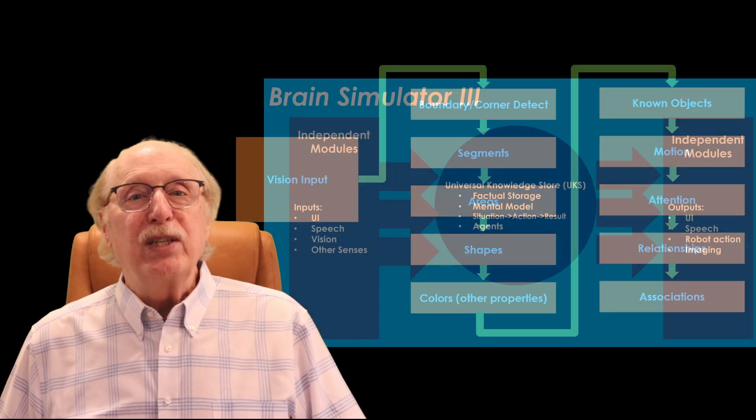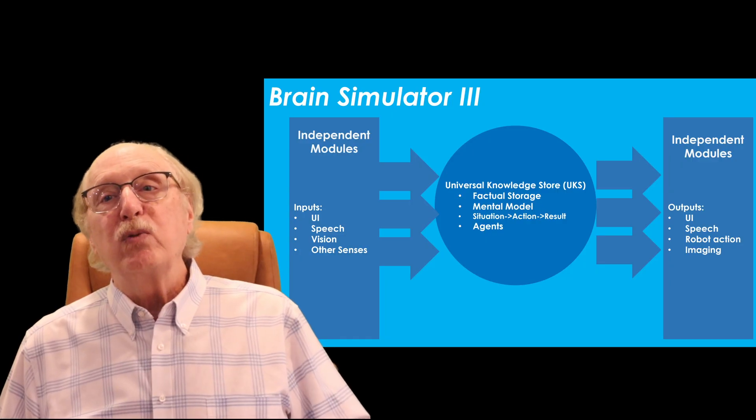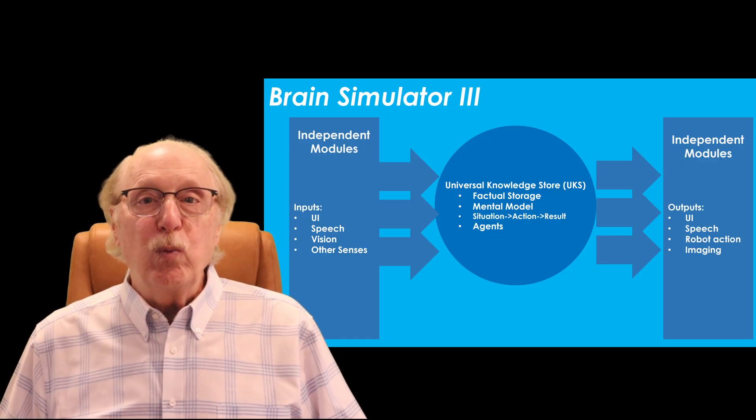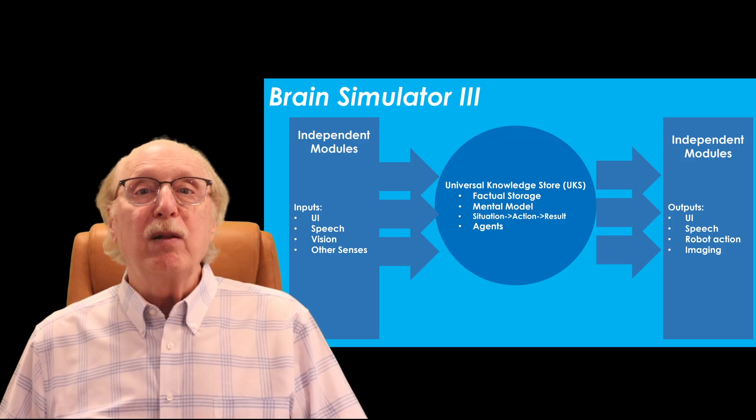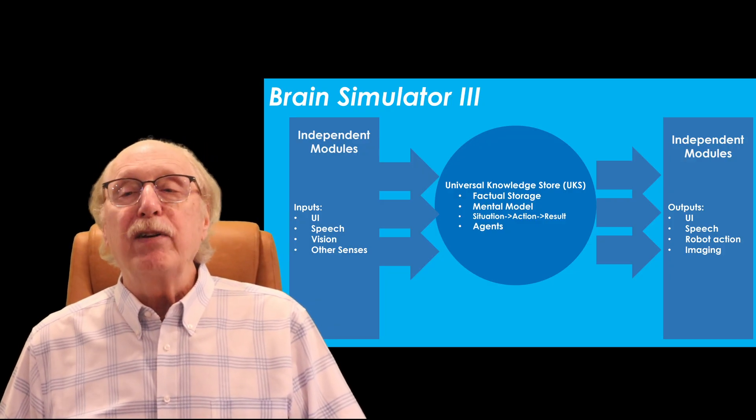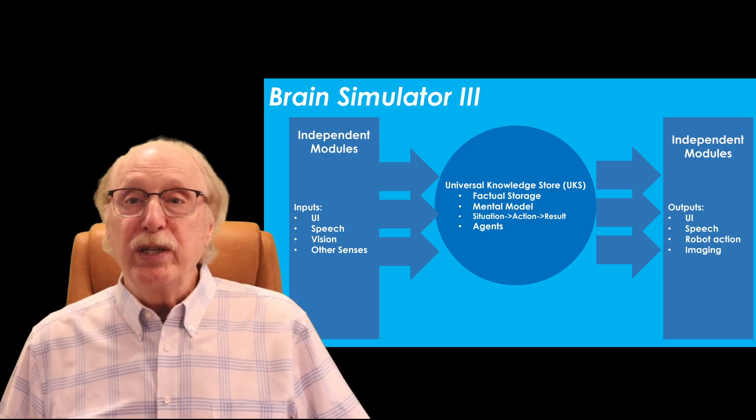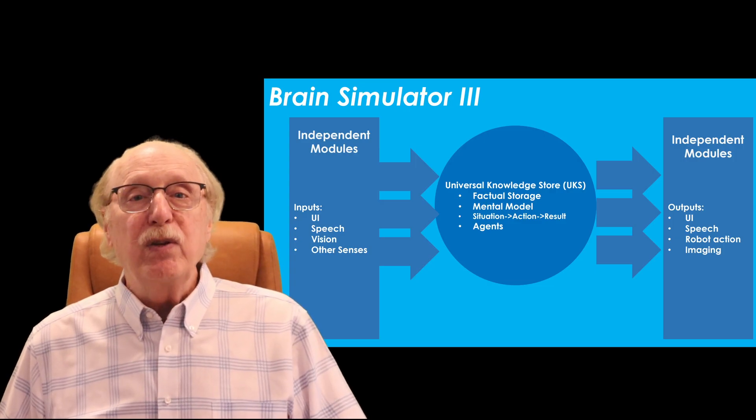Surrounding the UKS in the Brain Simulator 3 project are the modules that connect it to the outside world. This hub-and-spoke model means that every sense and every action use the same structure internally — the structure of the UKS graph. This architecture makes Brain Simulator 3 fundamentally different from most AI systems today. Instead of building separate models for language, vision, and robotics, each with their own isolated representations, this approach unifies them through a single graph structure.